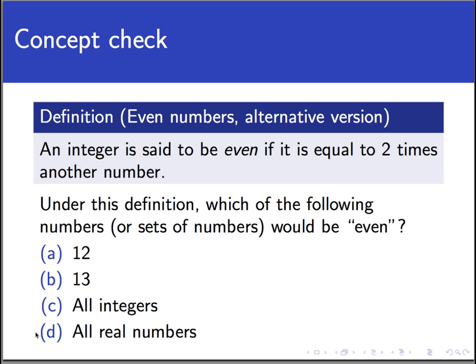So the best answer here is C, that under this definition, every integer, every whole number period would be considered even. Let's see why that is. Let's take the number 13, for example, from the list. 13 is an integer, of course, so the definition does actually apply. And is the number 13 equal to 2 times another number? Well, actually, yes it is. 13 is 2 times another number, namely, 13 halves. And so since 13 is 2 times another number, we'd have to call 13 even under this definition, and that's clearly ridiculous. So our definition is busted, and we have some fixing to do.